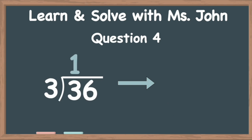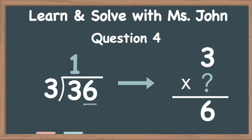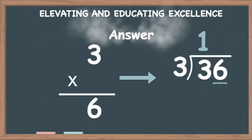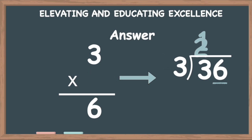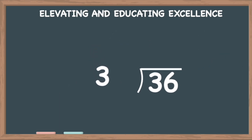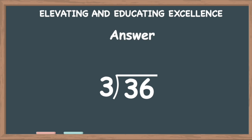Now we look at the 6. We're going to do 6 divided by 3. Therefore, 3 times what gives us 6? We write that 2 on top of that 6. In the rough box, we do 3 times 2 equals 6. We take that 6 and move it underneath the other 6, so 6 minus 6 equals 0. The answer of 36 divided by 3 equals 12.